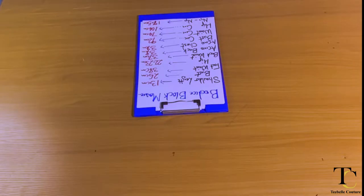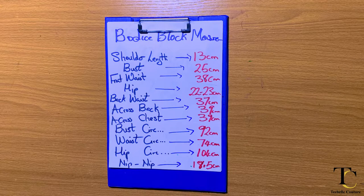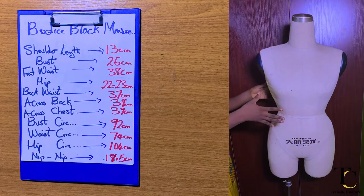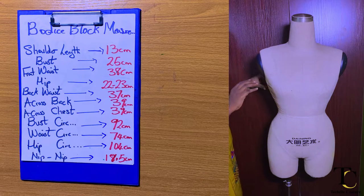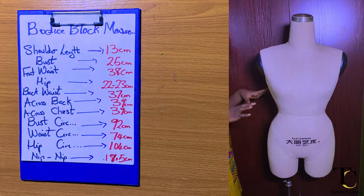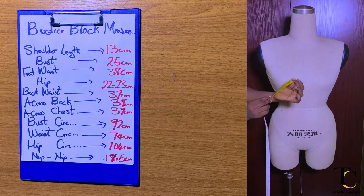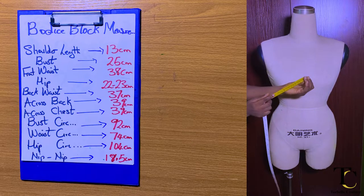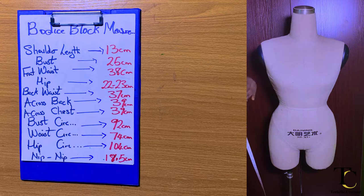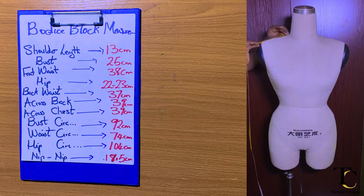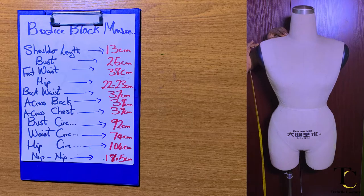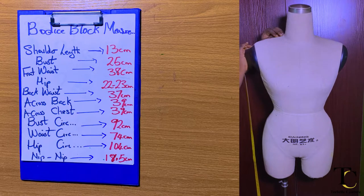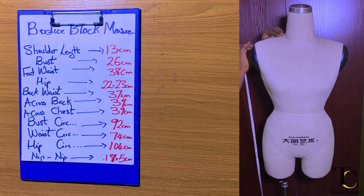I'm going to be using my body measurements in this video and I'm also going to show how to take your body measurements. Let's say for instance this is my body and I need to take the measurement — I need my tape rule. I'm using a tape rule that is in both centimeters and inches; I'll be taking these measurements in centimeters. First, I'll place my tape along my shoulder line to measure my shoulder length.